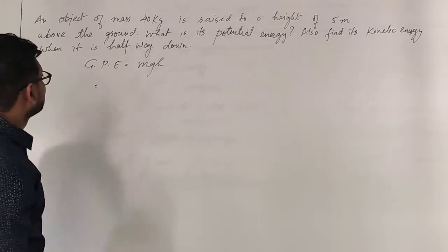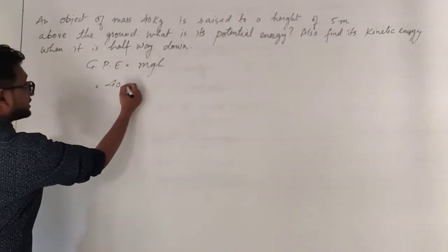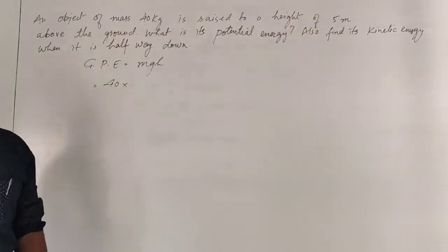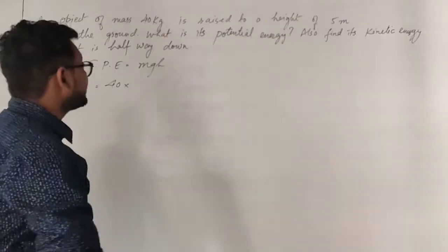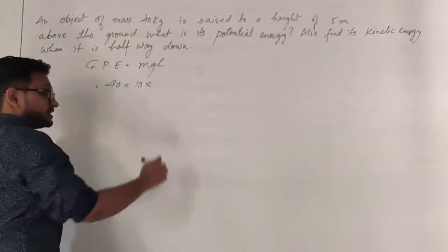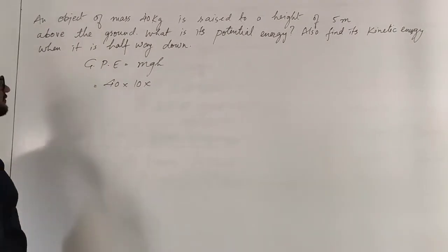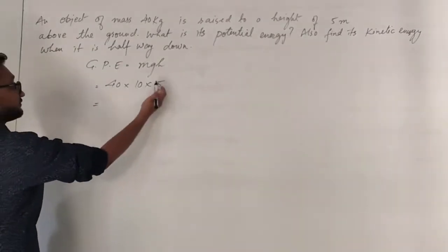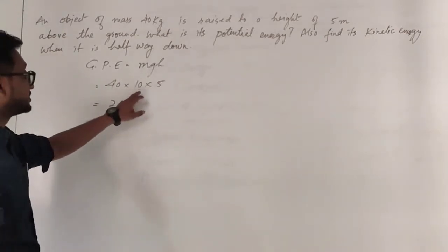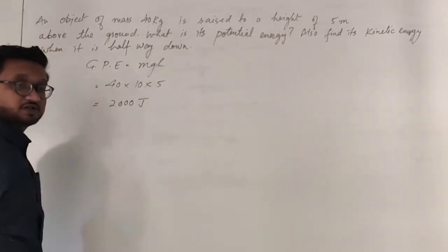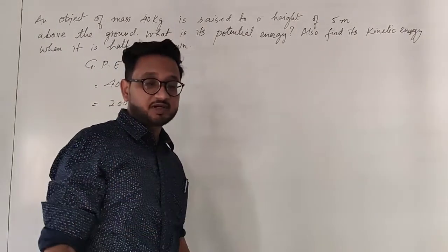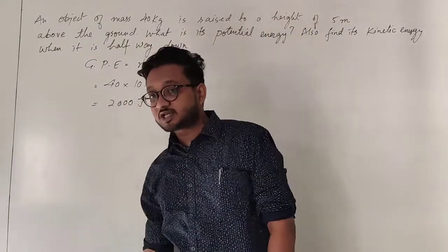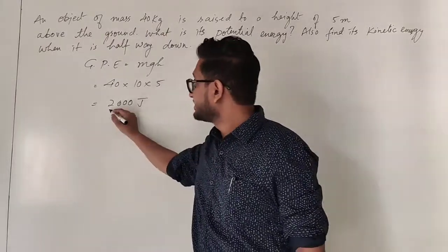Over here, mass is 40 kg, multiplied by gravitational acceleration — which is 9.8 or 10; in this question let's take 10 — and the height is 5 meters. Simple multiplication: 5 into 4 is 20 and 2 zeros, so it becomes 2000 joules. If you take 9.8 it will be a little bit less. So the total energy of this object at a height of 5 meters is 2000 joules.